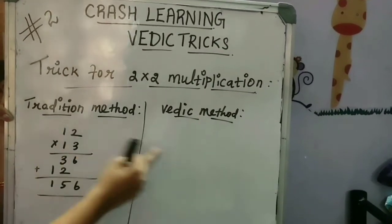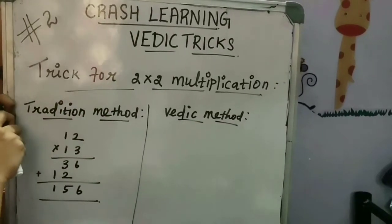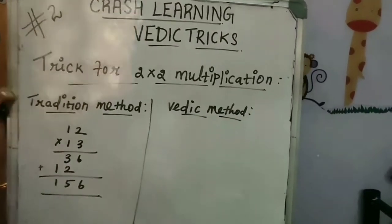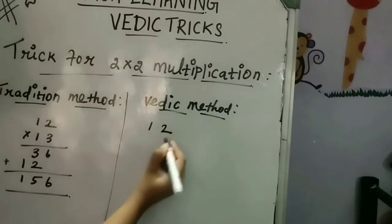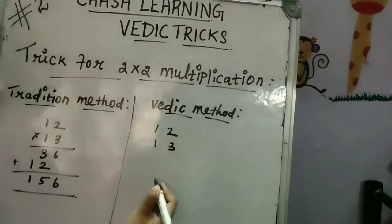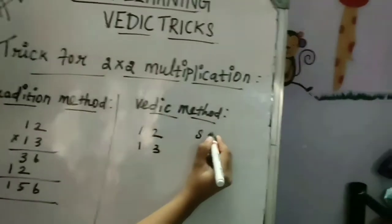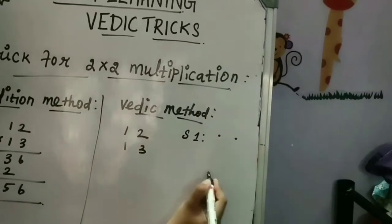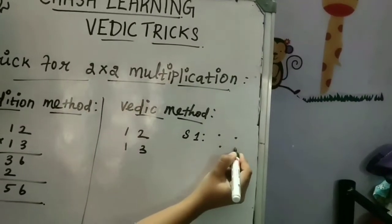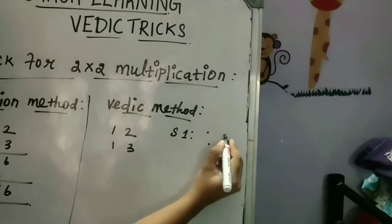The product is 156. Now let's see in Vedic method how we are going to solve this. Let's take the same number to verify the answer. Now the same 12 and 13. Step 1: In step 1, I'm considering 12 as these two dots and 13 as these two dots.